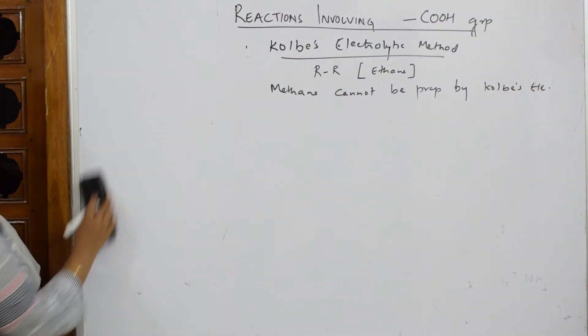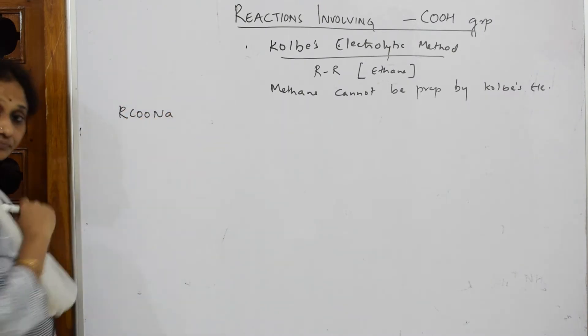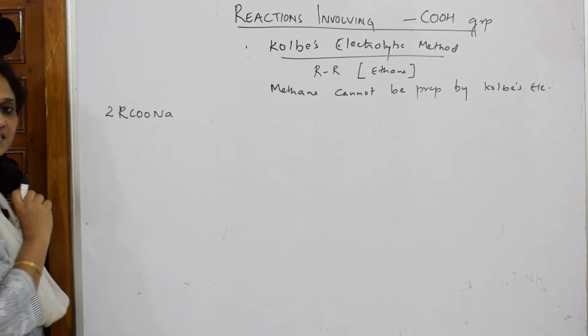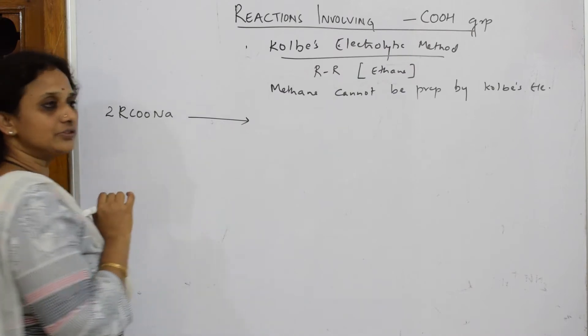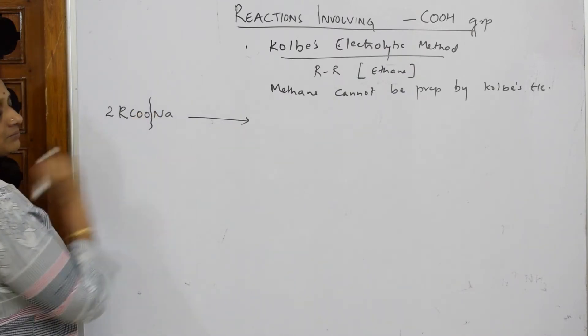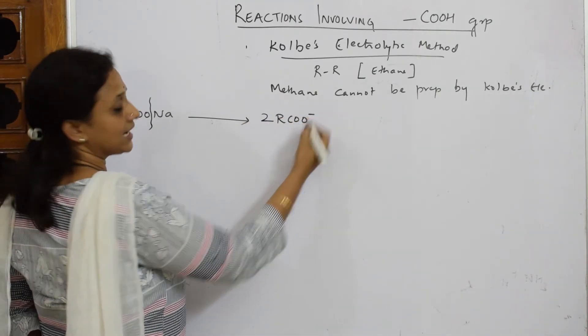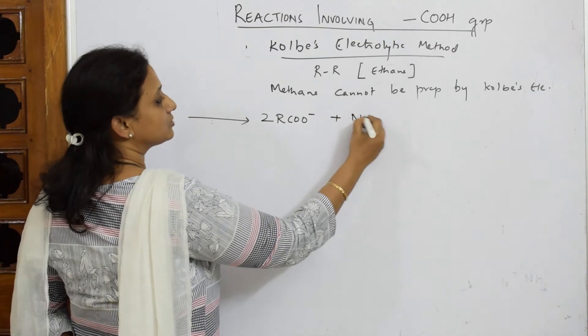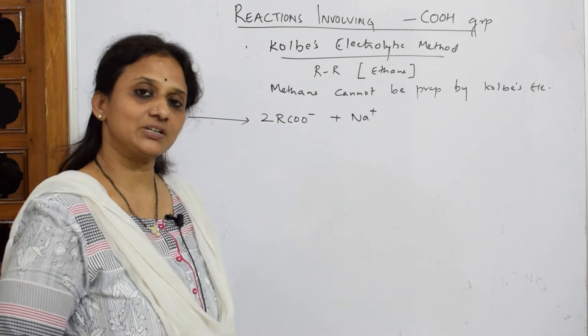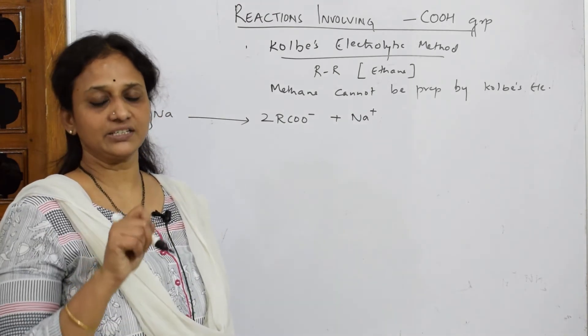For Kolbe's electrolytic method, you're going to take sodium acetate. When you're taking sodium acetate, try to pick up two moles. When this is dissolved, it's going to dissociate. You get RCOO- anion and you get Na+ cation. This whole thing occurs in an electrolytic cell which has both the cathode and anode electrode and connected to the circuit.